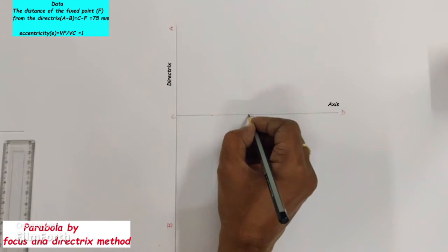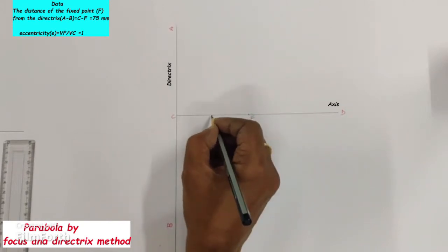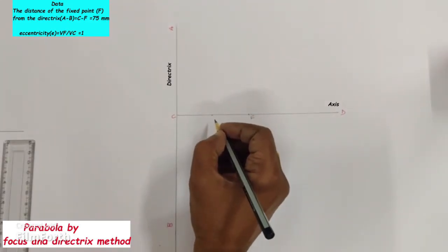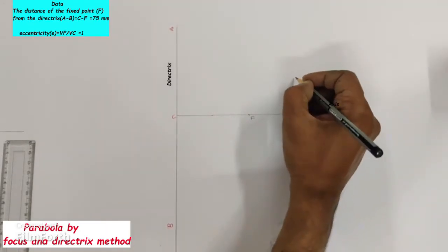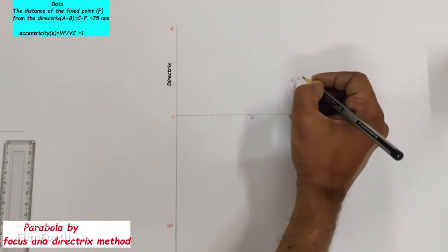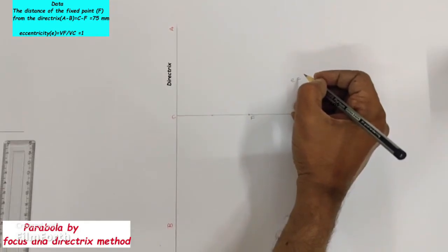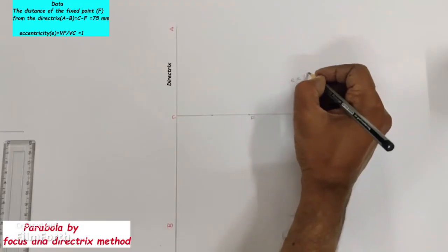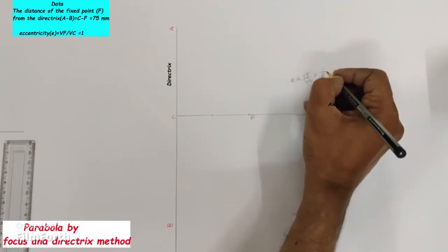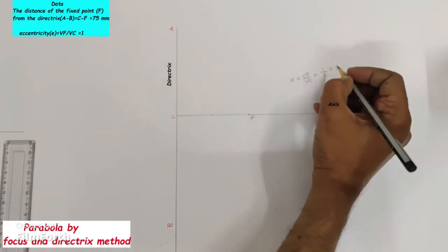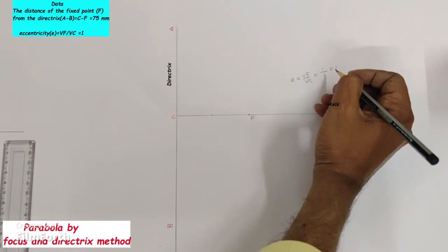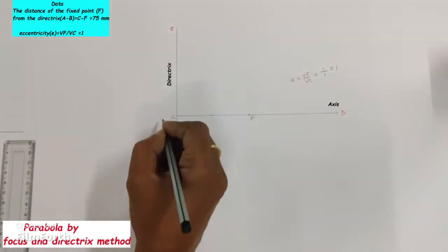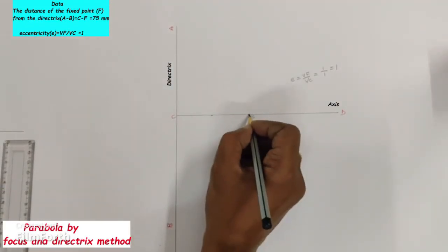After locating the focus point F, the next step is locating the vertex point V on line CF. For locating vertex point V, we use the eccentricity ratio: e equals VF by VC, which equals 1 by 1, which equals 1. That means the vertex point V is one unit from the focus and one unit from the directrix. So bisect CF to locate vertex V.